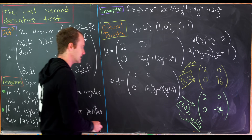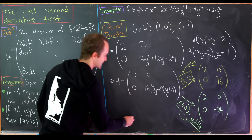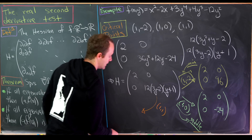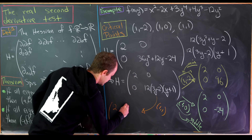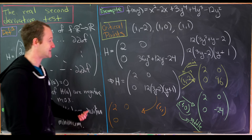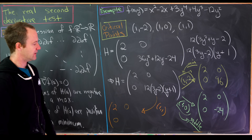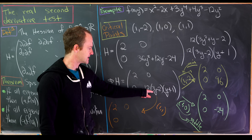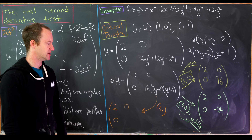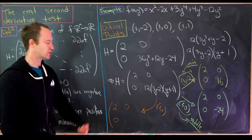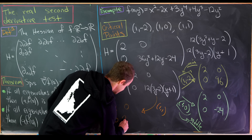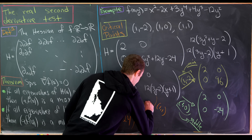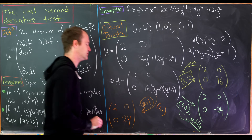Finally, evaluating at the critical point (1, 1): plugging y = 1 into 12(3(1) − 2)(1 + 1) = 12(1)(2) = 24. The matrix is diag(2, 24), and both eigenvalues are positive. So this critical point is also a local minimum.